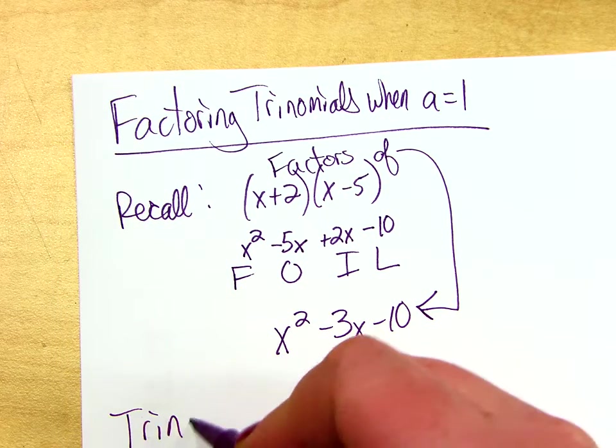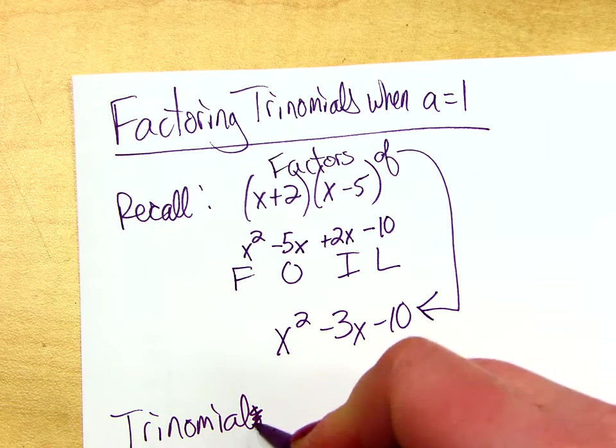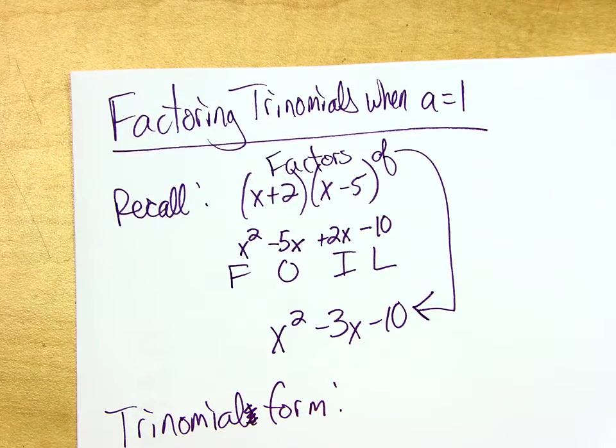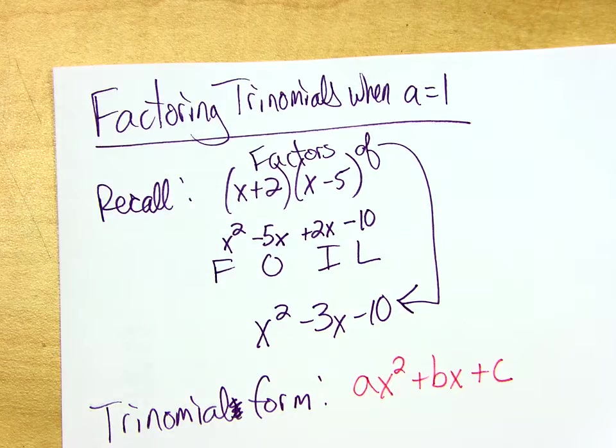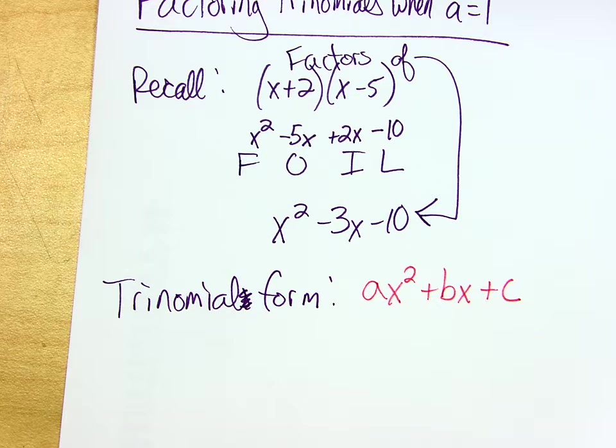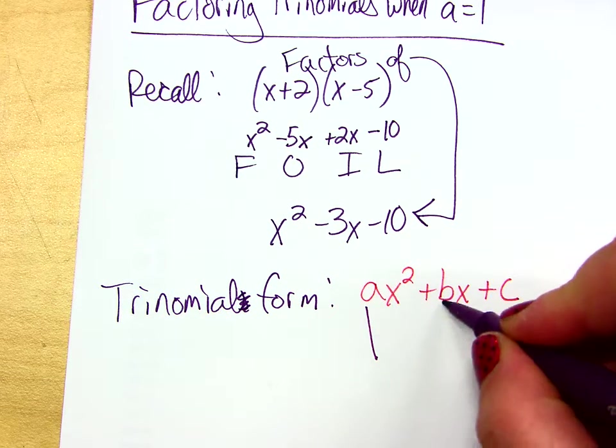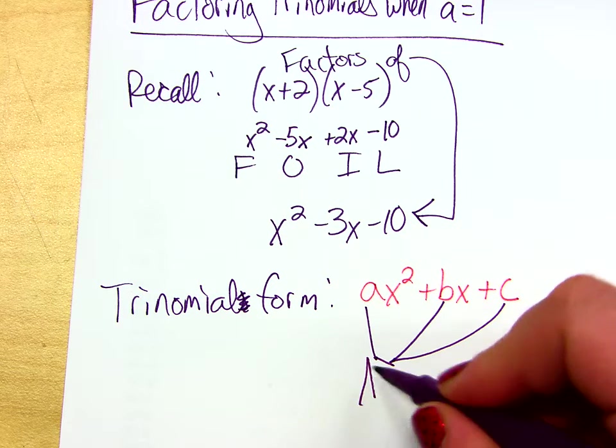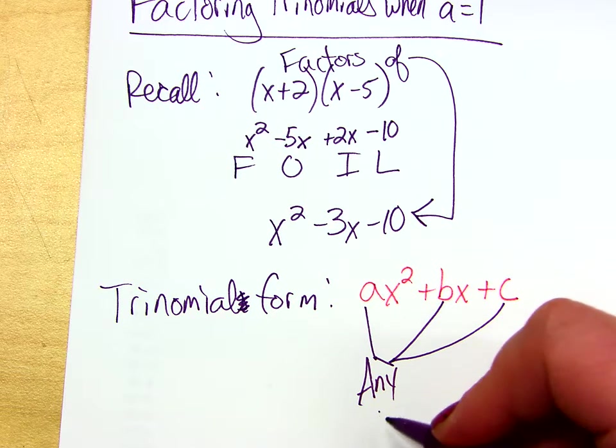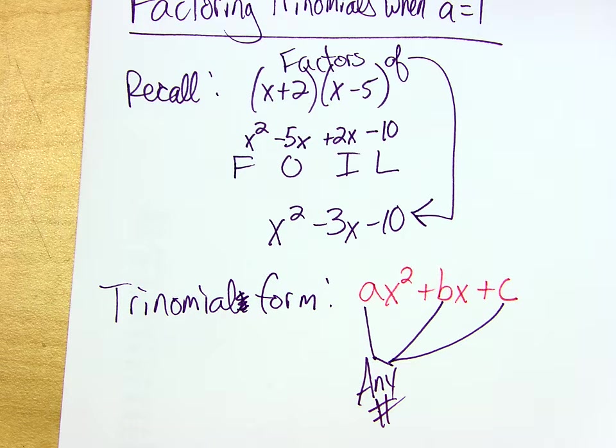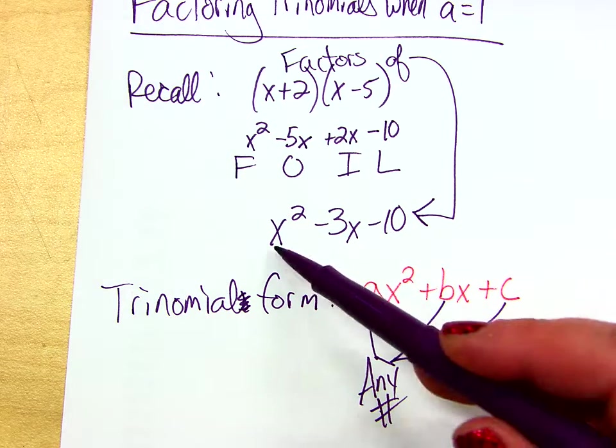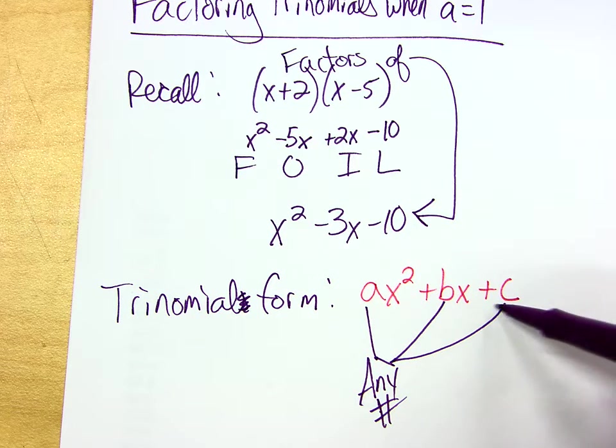So a trinomial form. Here's how they are all basically set up. ax squared plus bx plus c. A, B, and C are just different numbers. So A, B, and C are, let's just say any number. So A is just the number in front of the x squared. B is the number in front of the x. And C is the constant all by itself.